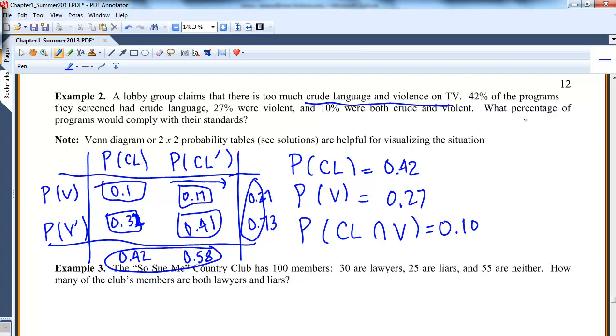So what's the question? What percentage of programs would comply with their standards? Comply with their standards is probability don't have crude language and don't have violence, which is 0.41 down here in this corner. Or that's the same thing as probability of not crude language or violent.